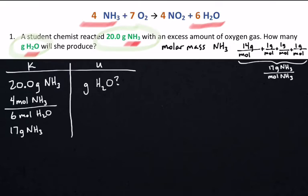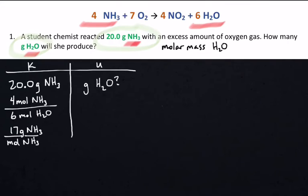Notice how I also label all of those units. I don't just say grams per mole, I say grams NH3 per mole NH3. Now we're going to do the molar mass of H2O. That's the other one that we care about.